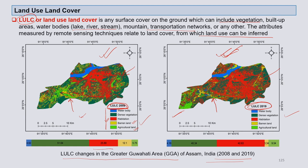Look at the percentage coverage: in 2008, dense vegetation was 51%, now it is 40% in 2019. Habitation was roughly 26% in 2008, but by 2019 it is almost 43%. So imagine how the increase of population in Assam is taking a toll on agriculture as well as green areas.